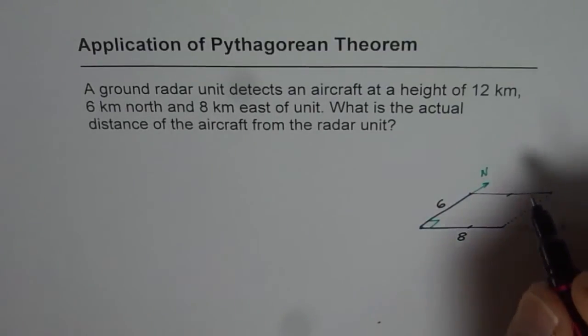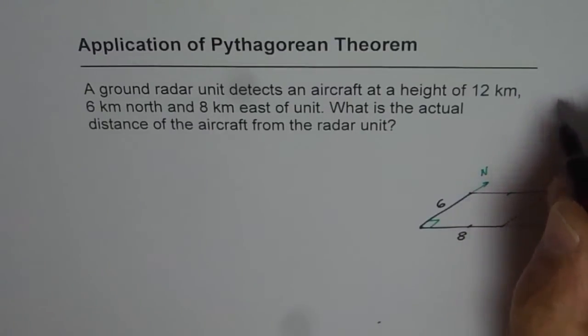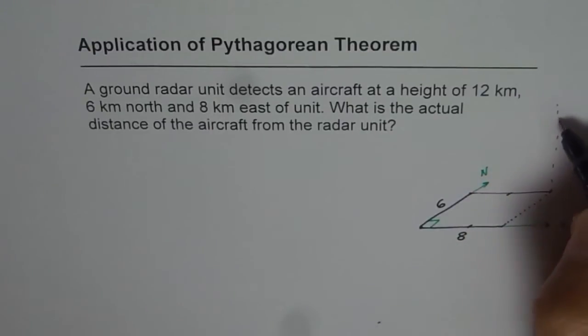And now the height of this aircraft is shown as 12 km and let us use vertical axis as the height. So that represents the height. So along this height, let us say this is 12 km.